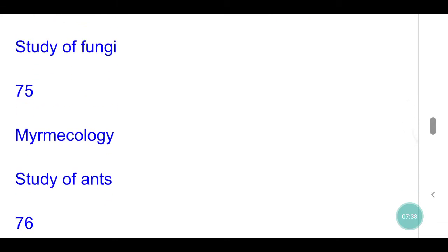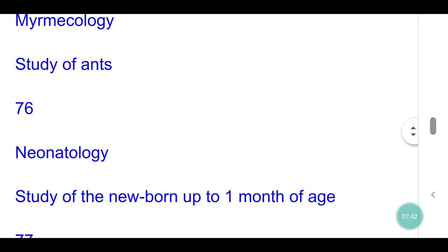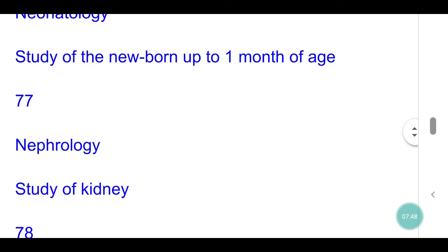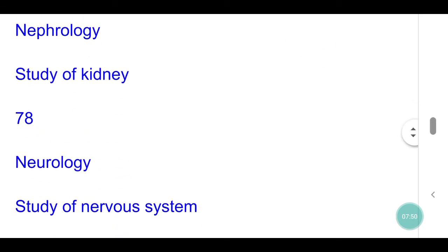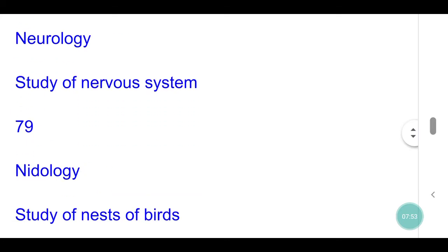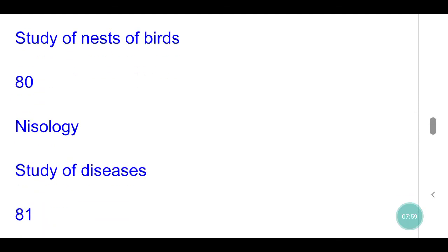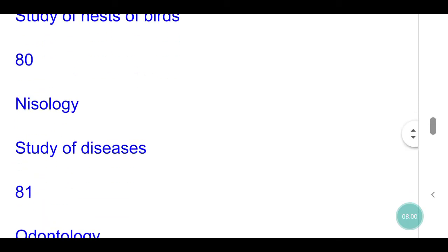Myrmecology: study of ants. Neonatology: study of the newborn up to one month of age. Nephrology: study of kidney. Neurology: study of nervous system. Nidology: study of nests of birds. Nosology: study of diseases.